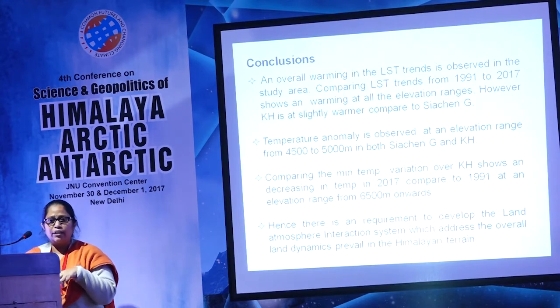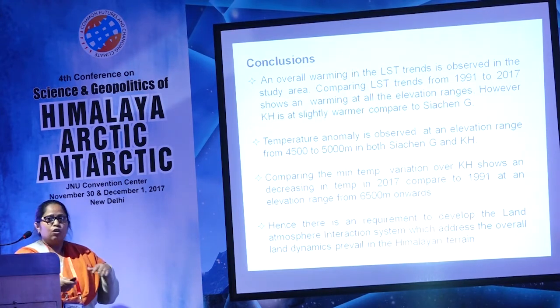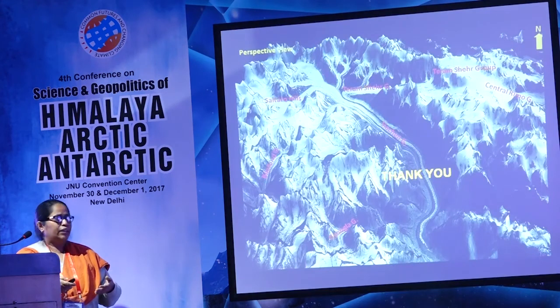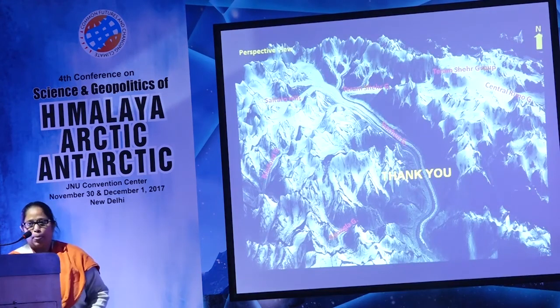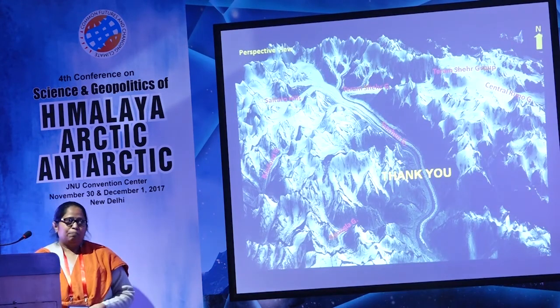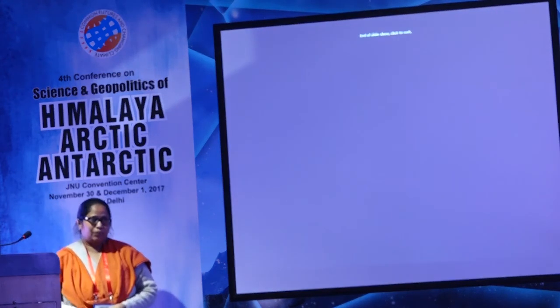We can see that what we are observing is only one aspect of the full picture. We need to build a comprehensive land surface model that includes all parameters and can tell us the real status of the glacier. Taking the overall area together, rather than only individual pockets, will allow us to understand what is really happening. Thank you.